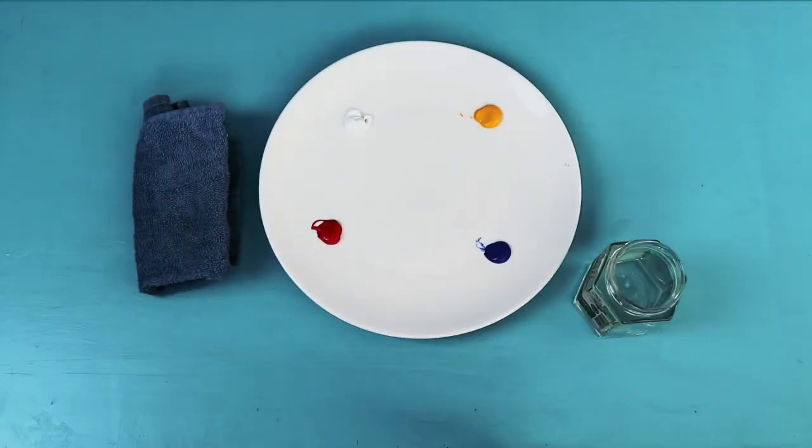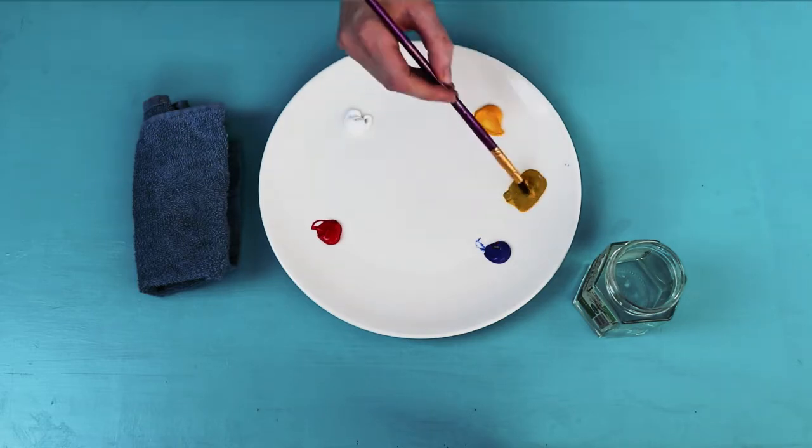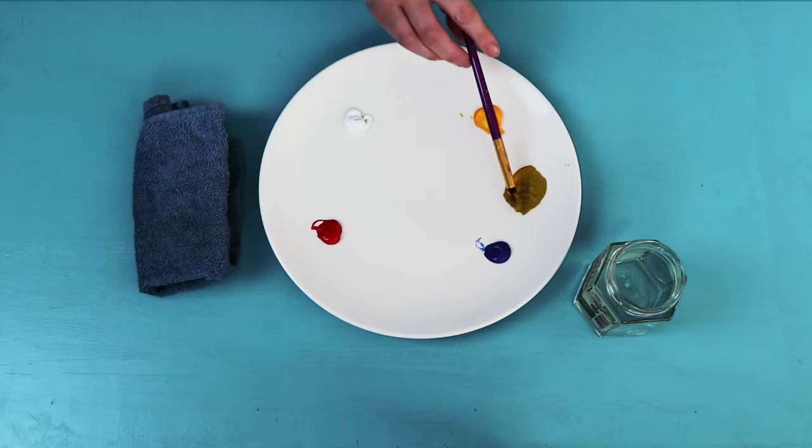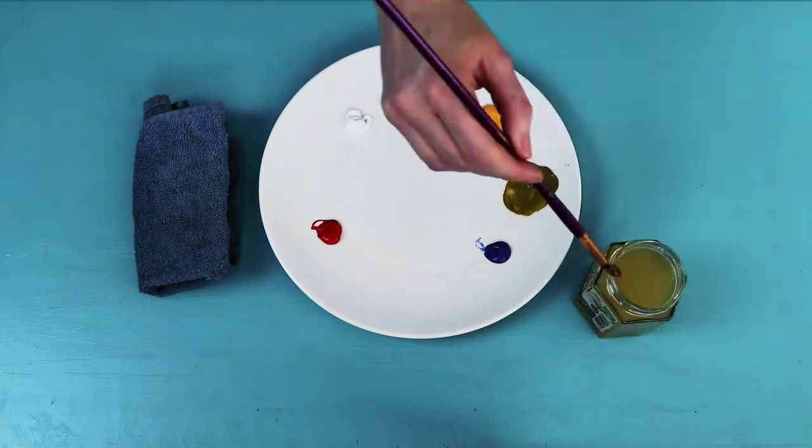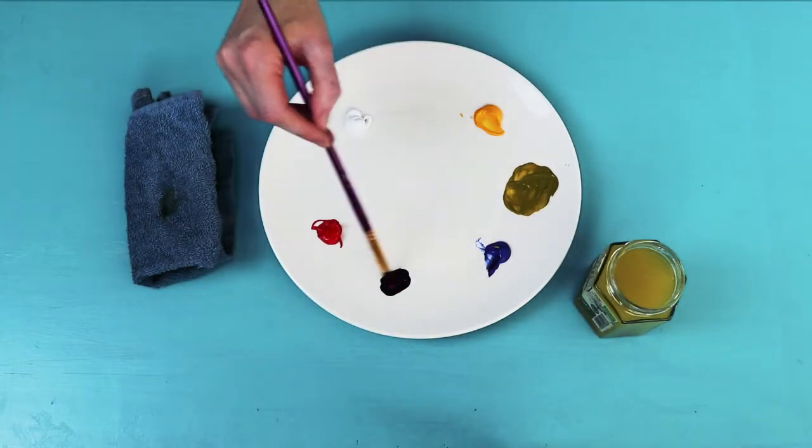Now to mix your colours. Mix yellow with a little blue to make green. Make sure to wash your brush before you mix a new colour. Mix blue with a little red to make purple.